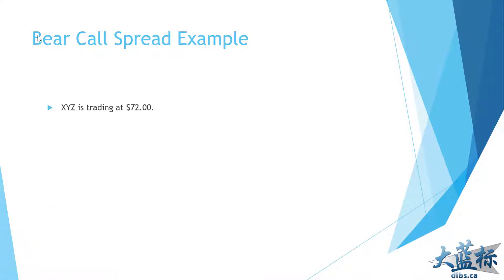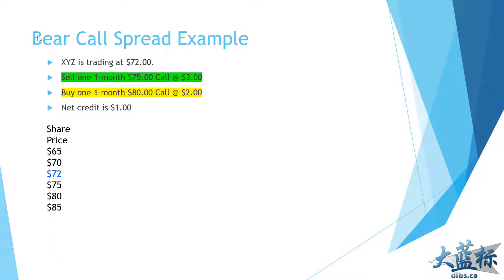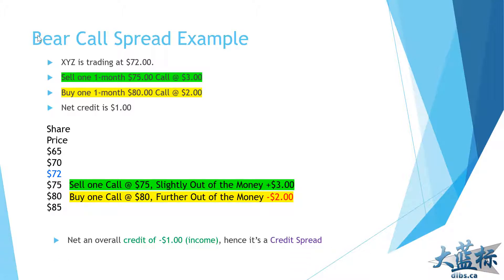Here's an example: company XYZ trading at $72. We sell a $75 call for one month at $3 incoming, then buy an $80 call for $2, so the net income is $1. With $3 coming in and $2 going out, my net income is $1 — a credit spread, essentially a reduced-cost call option sale.